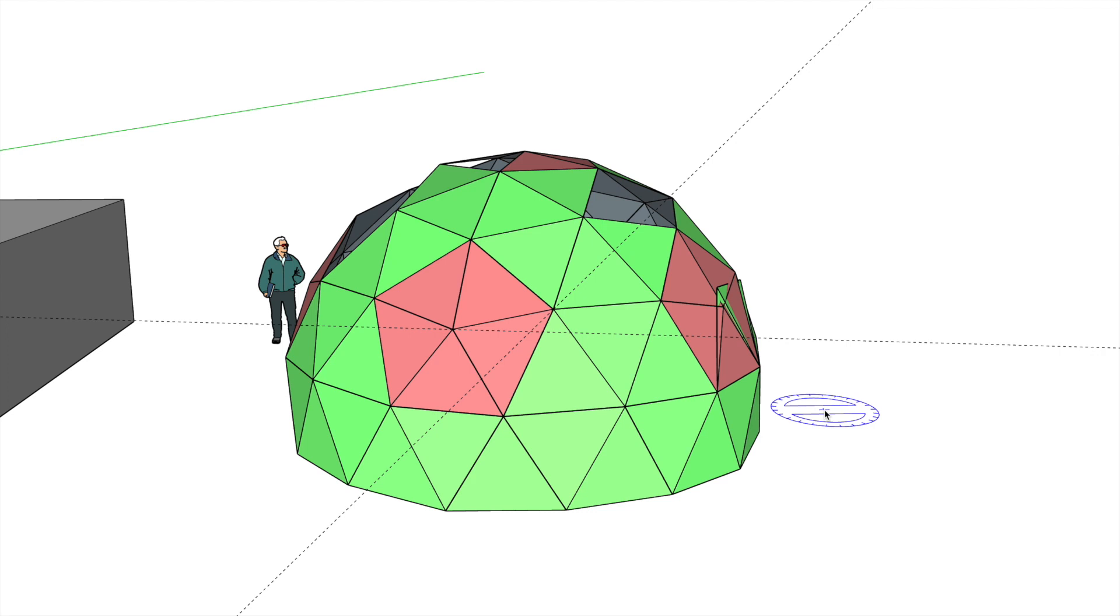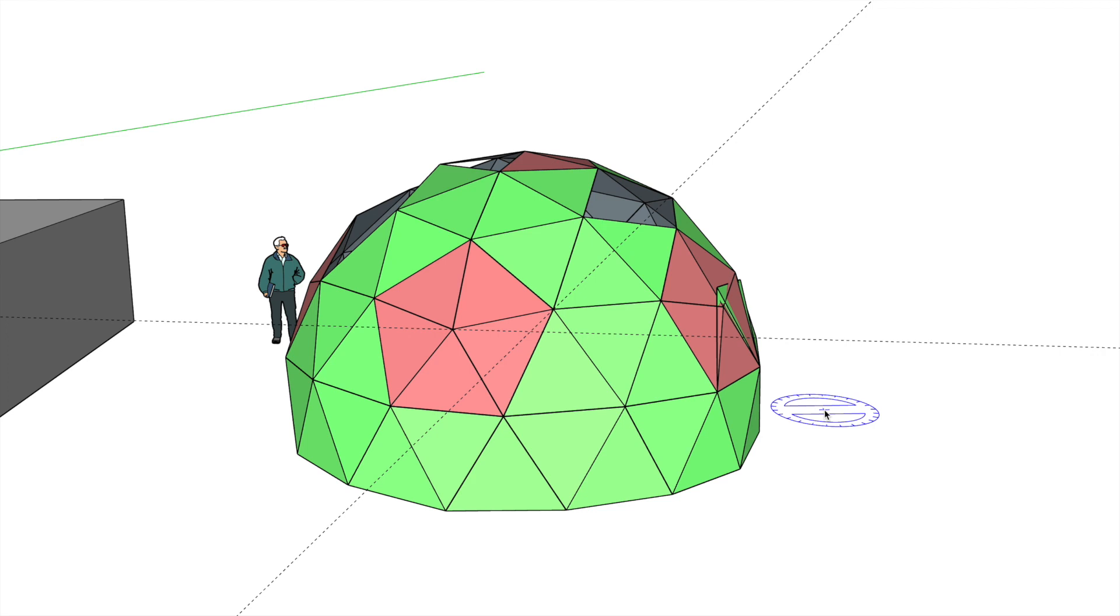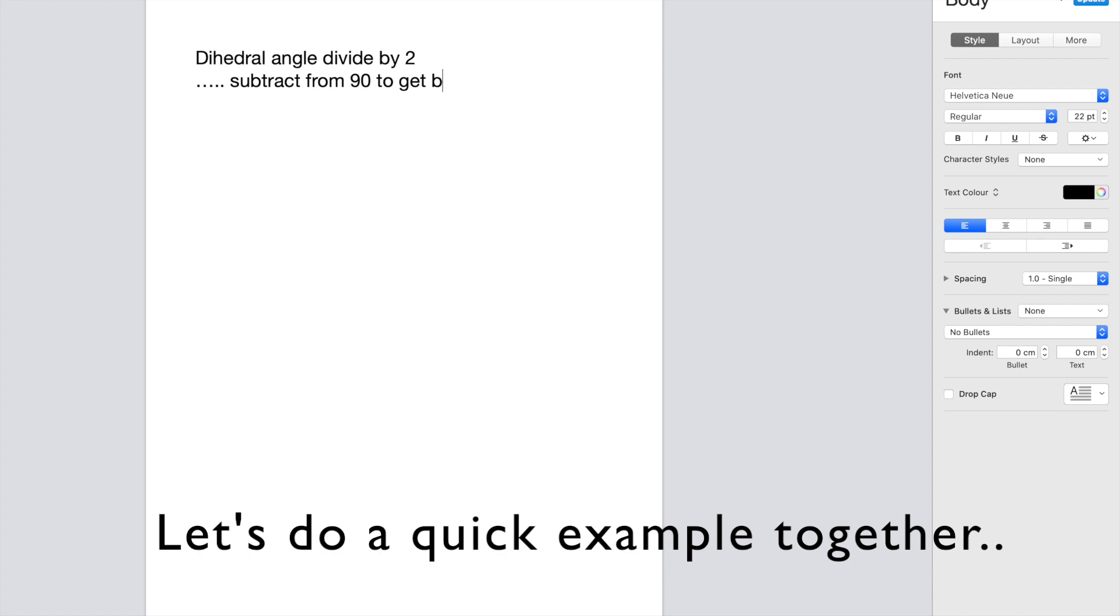From there, this is the equation that you need: dihedral angle, what you just measured, divide by 2. So half the dihedral angle subtract from 90 to get the bevel angle.